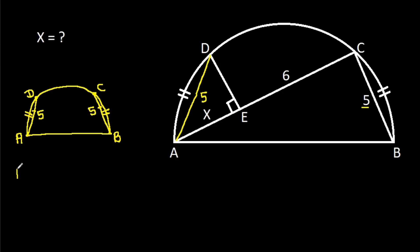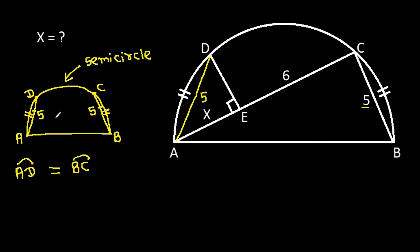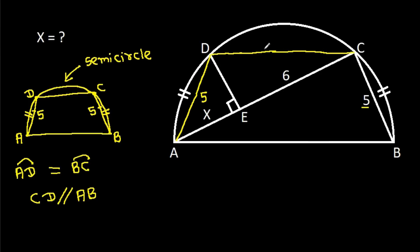Also, since arc AD is equal to arc BC and it is a semicircle, that means CD will be parallel to AB.